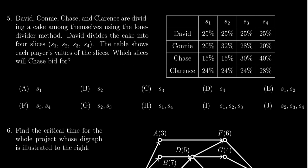Chase would bid for slice three and slice four because those are greater than or equal to 25%. He would not take the 15% slices because that's less than 25%, so he will not take share one or two.